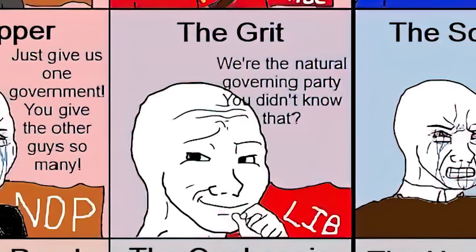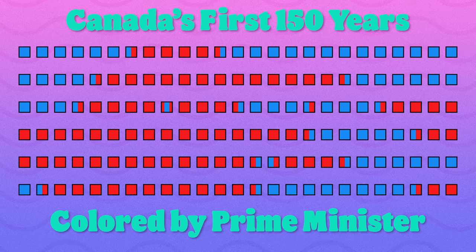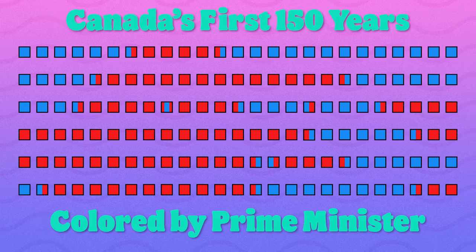Next to The Dipper we have The Grit, saying 'We're the natural governing party. You didn't know that?' Grit is an old-fashioned nickname for a member of the Liberal Party of Canada. One of the Liberal Party's self-flattering nicknames is the 'natural governing party.' This refers to the fact that when you look at the tenures of different Canadian prime ministers, most of the ones who have reigned the longest have all been Liberals. The argument is that in Canada, the natural order of things is to always have a Liberal prime minister, except in exceptional circumstances.